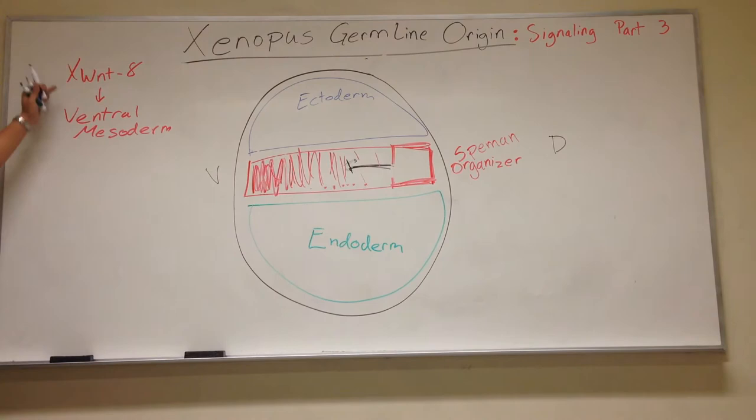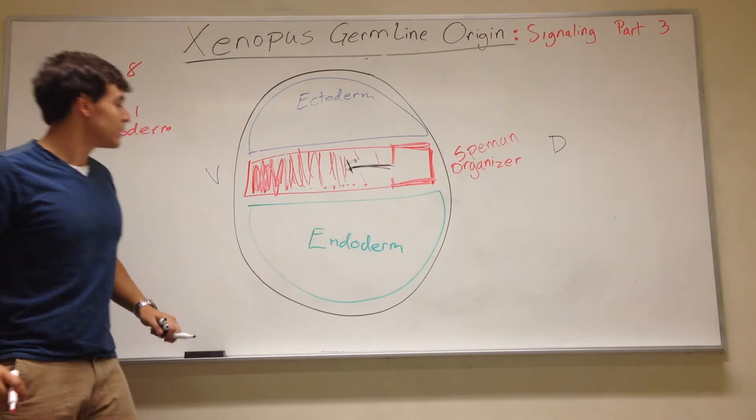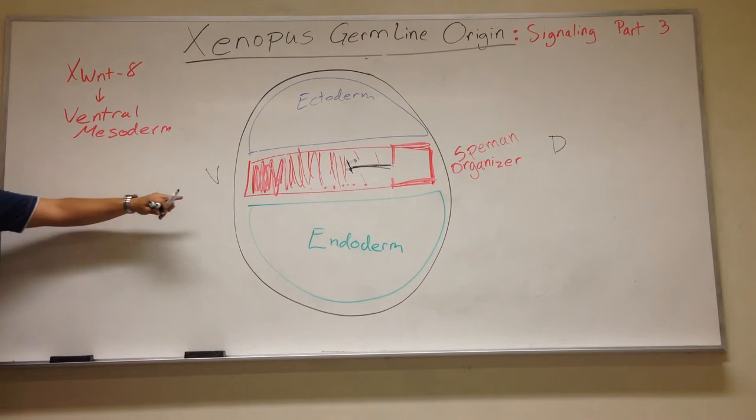Where X-Wnt8 is highest, we'll get ventral. Where it's lowest — almost none — we'll get dorsal, and at an intermediate level we'll get the middle area of the mesoderm. So that's how we get patterning of the mesoderm.